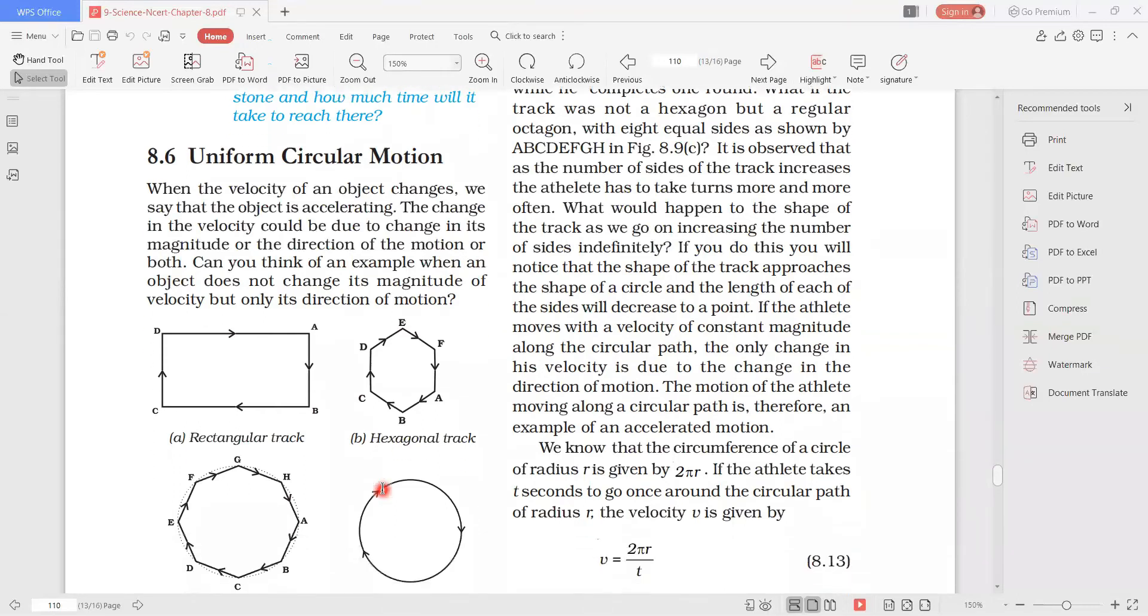Displacement in all tracks will be zero because our initial and final points are the same. So we have to start at A and go back to A. Displacement is the shortest path.